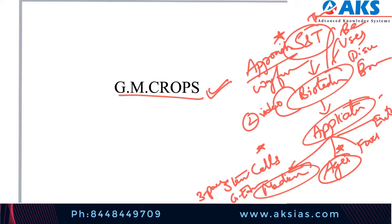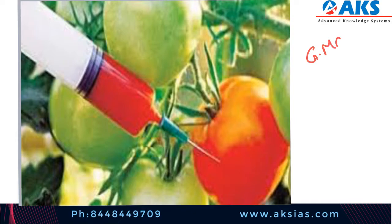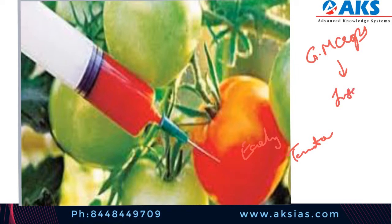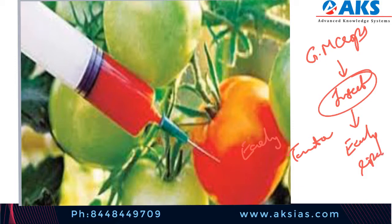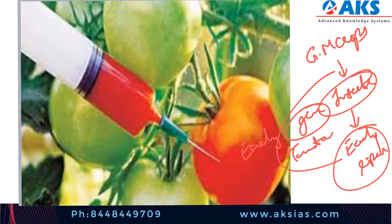So let us start with GM crops. Let us understand genetically modified crops in a very simple way. For example, if I want early ripening of tomatoes, I insert some gene to achieve that. Insertion of this gene into the fruit, tree, or plant is called genetically modified crops.